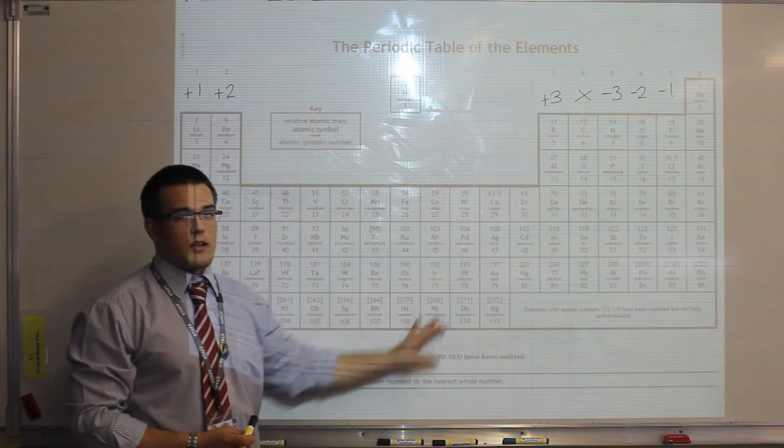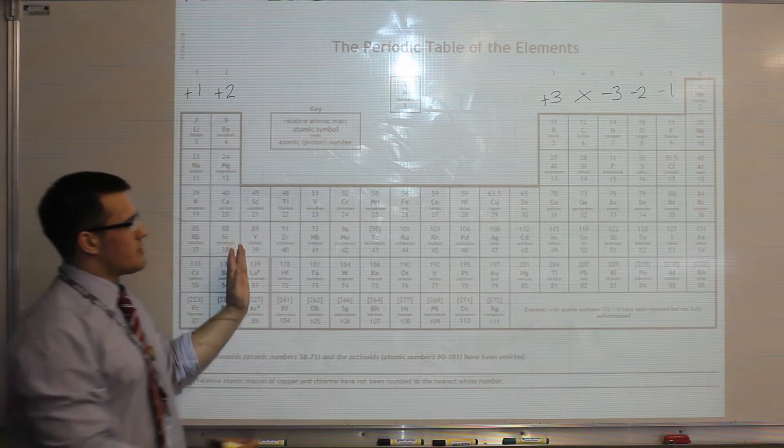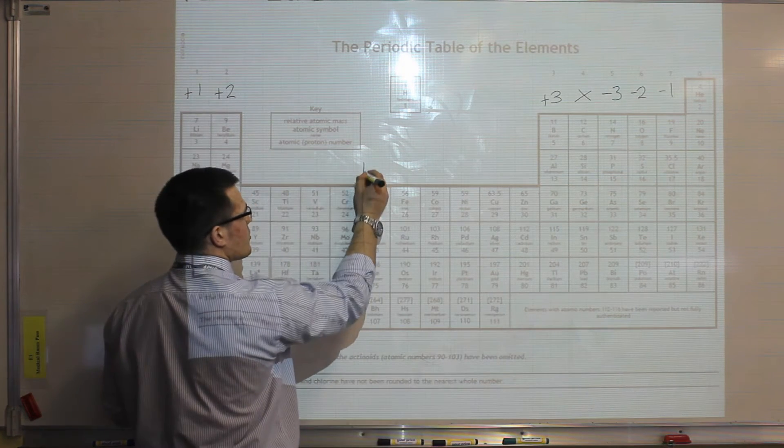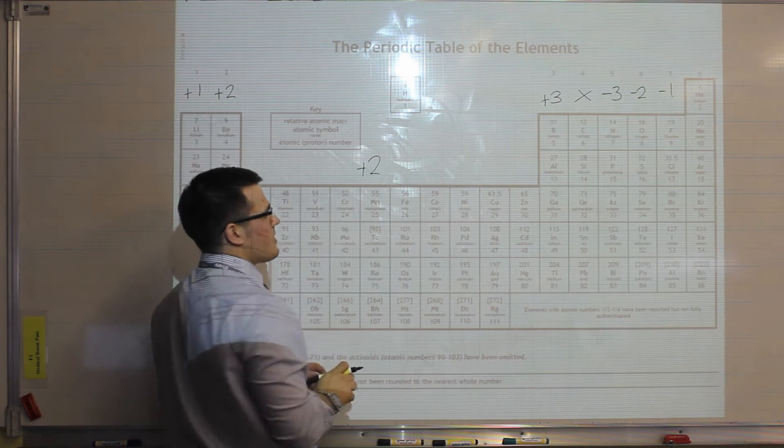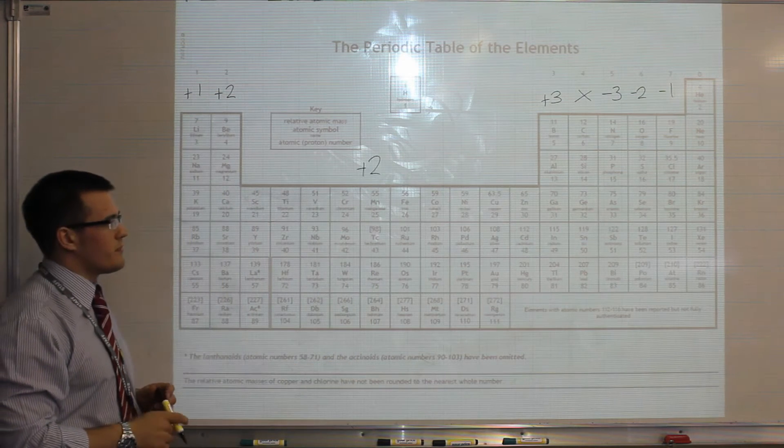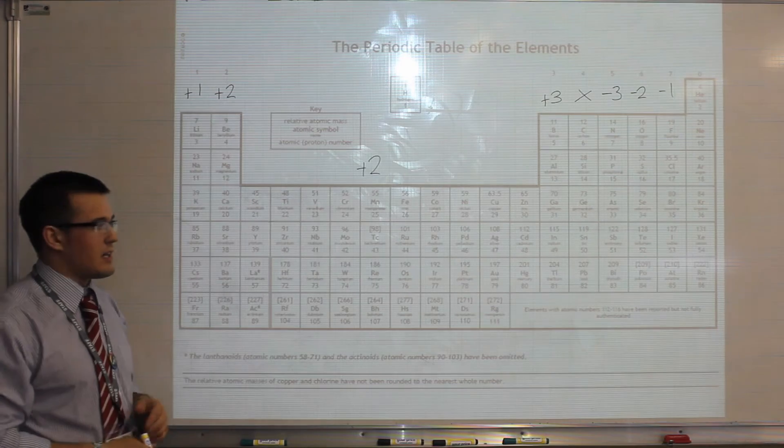Now, we've obviously missed out the transition metal elements, so any element that falls in the middle of the periodic table here, we can always assume is a plus 2 charge. However, there are two exceptions to that.